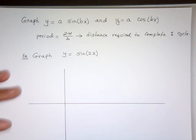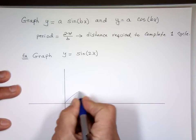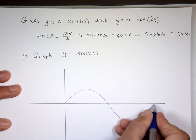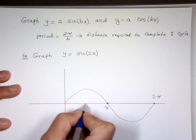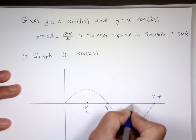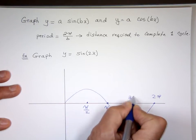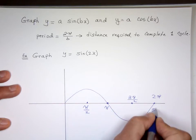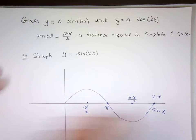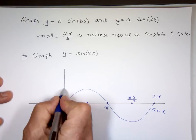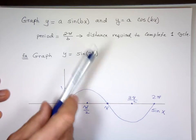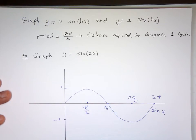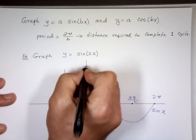The basic sine function looks like this — it has a period of 2π, with key points at π/2, π, 3π/2, and 2π. It goes as high as 1 and as low as negative 1. So what is that 2 going to do? That 2 is going to change the period for this function.